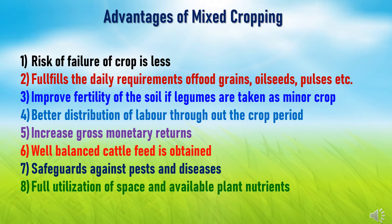Regarding the advantages of mixed cropping: since we are growing two, three, or four crops together, even in unfavorable weather conditions the chances of complete failure are very low. This ensures an assured income to the farmer from at least one crop. So we can say there is reduced risk of failure in mixed cropping.